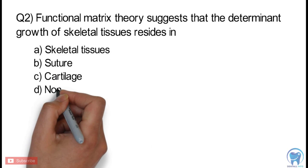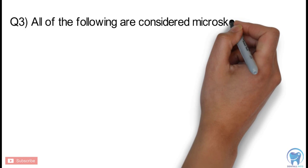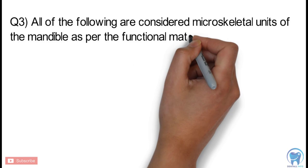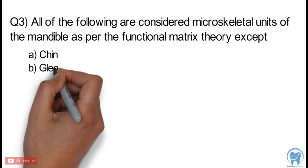Question 3: All of the following are considered microskeletal units of the mandible as per the functional matrix theory except. Option A: Chin. Option B: Glenoid fossa. Option C: Coronoid process. Option D: Angle of the mandible.